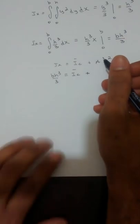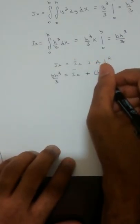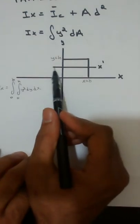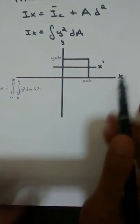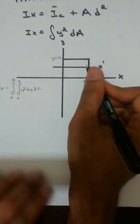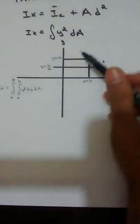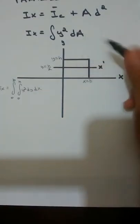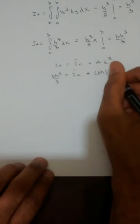What is the area of a rectangle? It's base times height, so we put b times h times d squared. Looking at our sketch, the axis parallel to the x-axis passes through the centroid at y equals h over 2, because the y-coordinate of the centroid of this rectangle is half the height. So d equals h over 2, and we multiply by (h/2) squared.